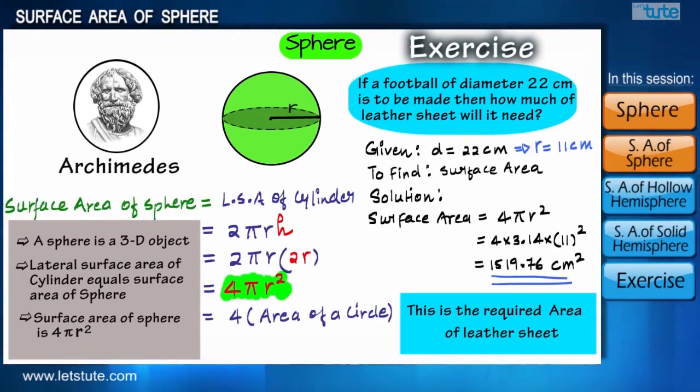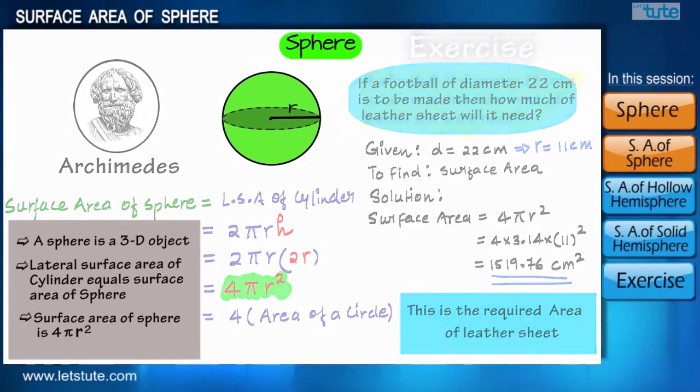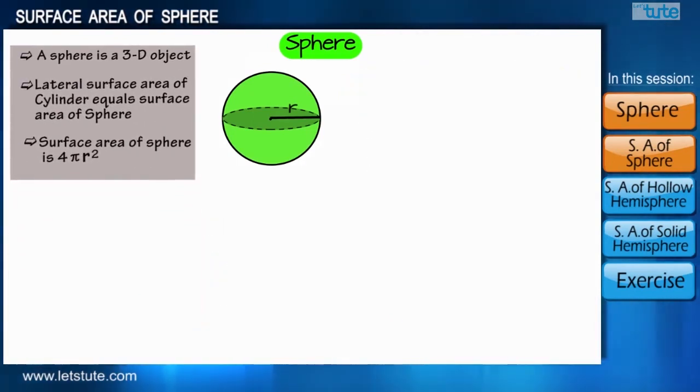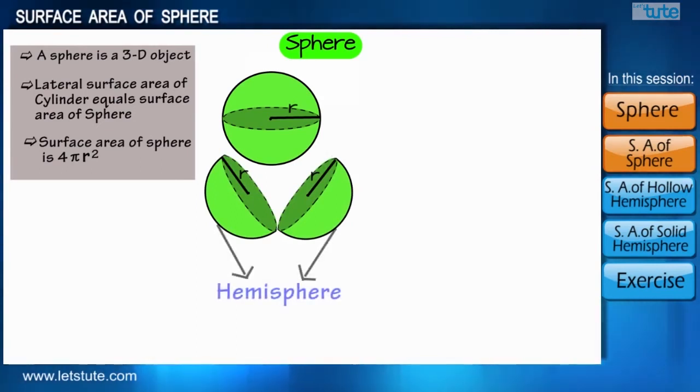It is also used in many ways which we are going to learn in our upcoming sessions. For now we proceed further and see what else we can get from a sphere. For instance, if we cut a sphere into two equal parts, these two half-cut spheres are called hemispheres.